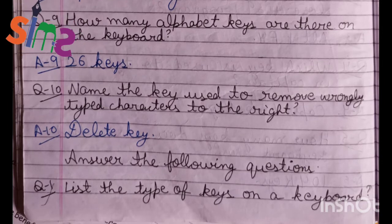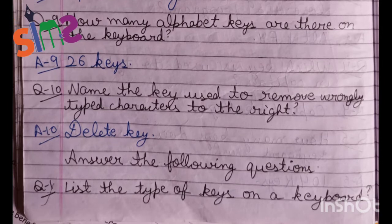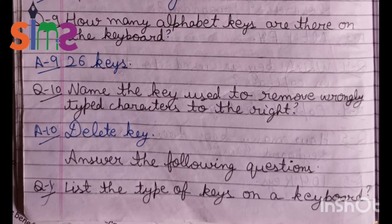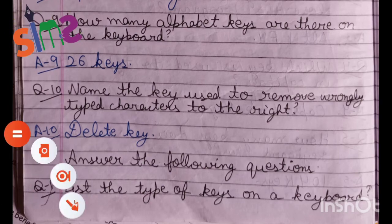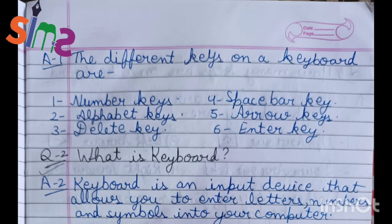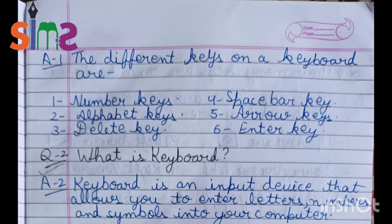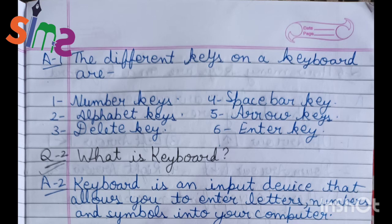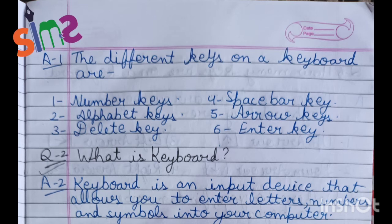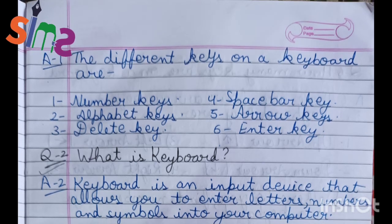Next is: answer the following questions. Our first question is: list the types of keys on the keyboard. The answer is — the different keys on the keyboard are: number keys, alphabetic keys, delete keys, space bar keys, arrow keys, and enter keys. These are all the types of keys on our keyboard.